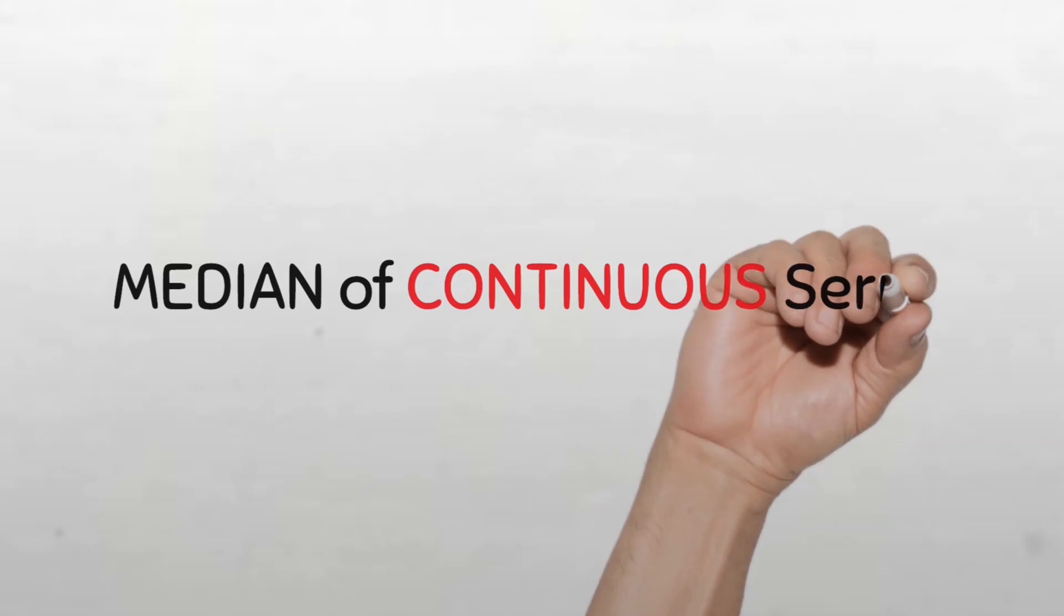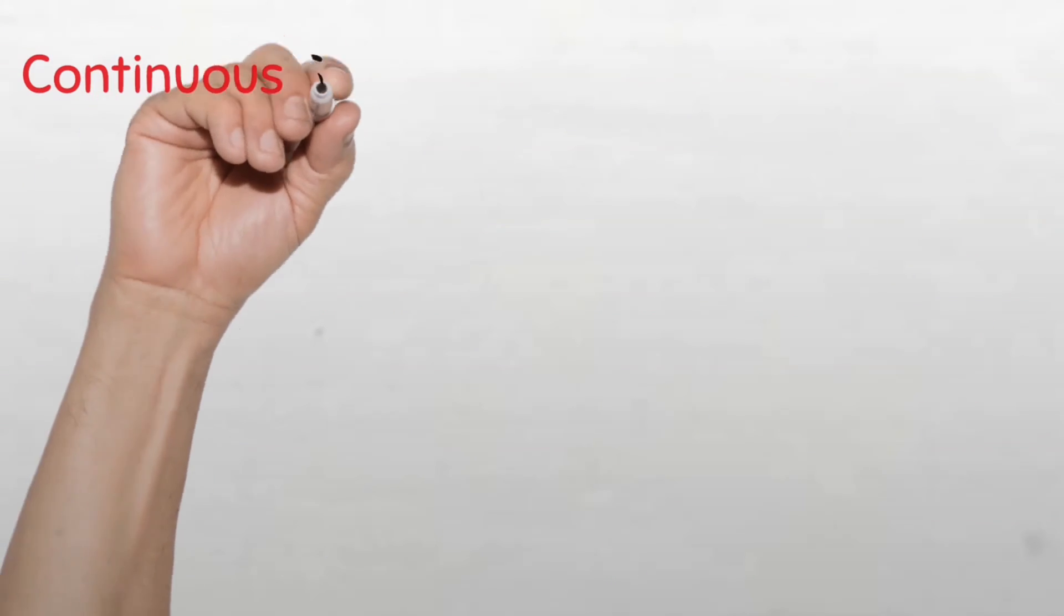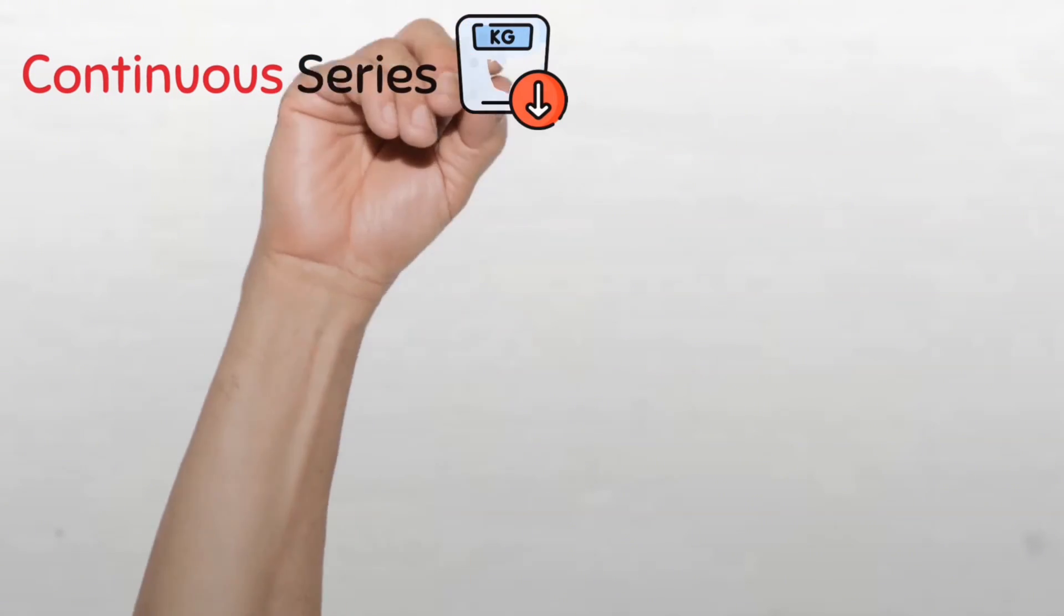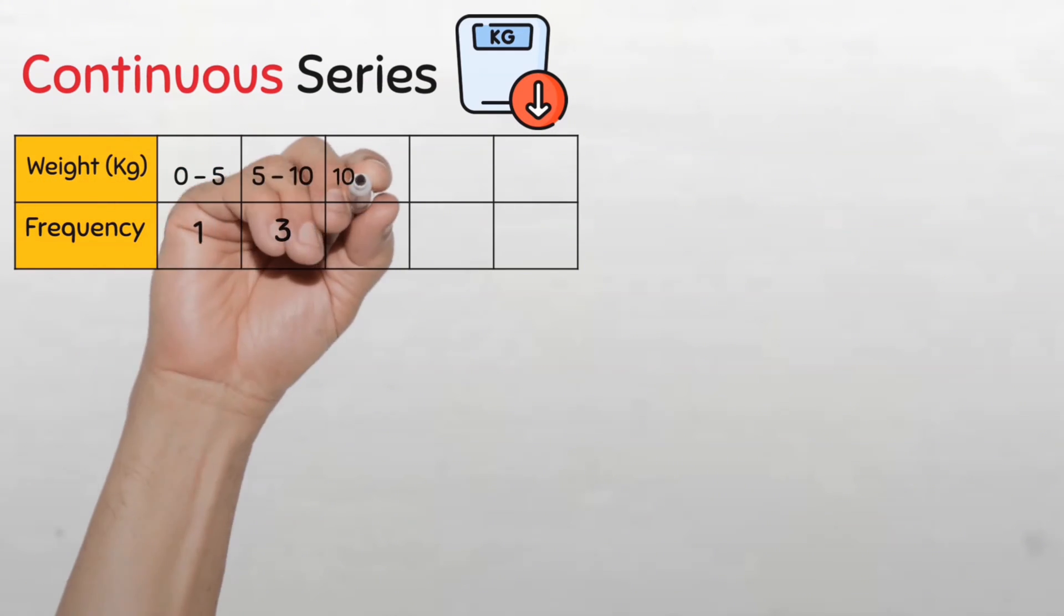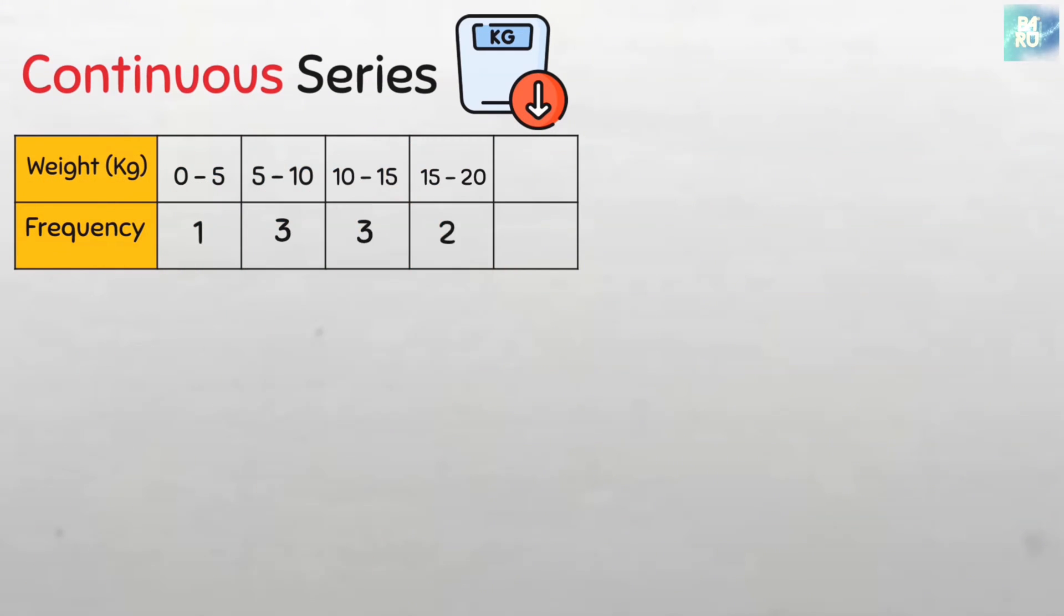Median for continuous series. This is a continuous series data on the weight in kilograms of a sample of 10 children attending the nutritional clinic in Samaruzaria, Nigeria. We know this to be a continuous series because we can see that the data is grouped and the frequency of each class is provided.